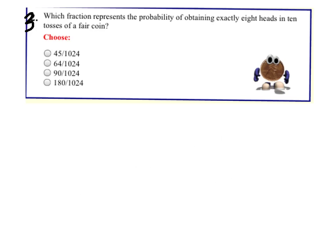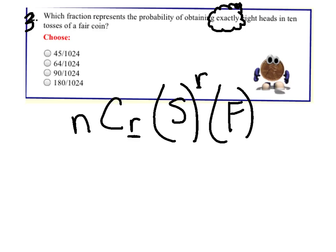Let's try another one. Question three. Which fraction represents the probability of obtaining exactly eight heads in ten tosses of a fair coin? Again, that key trigger word that you need to be looking for is the word exactly. That tells us to use that formula. nCr, success to the r. Again, these two should be the same. Failure to the n minus r. Don't be afraid to talk to yourself. Just go through and ask your question. What is the total number of times we're doing this? Which fraction represents the probability of exactly eight heads in ten tosses? So, I would say we're tossing it ten times, and I want eight of them. 10C8.